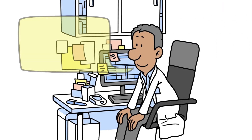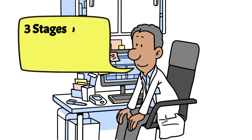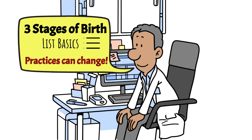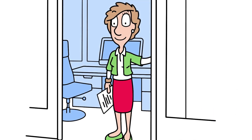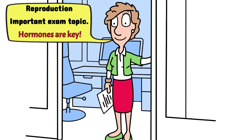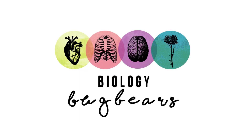For your exam, the most important thing you need to know is that there are three stages of birth and you must be able to list the basic details for each — bullet points only. Remember that science advances and these advances will influence practices, such as delaying clamping and cutting the umbilical cord. Human reproduction is a very important long topic that appears nearly every year on the exam, so it's worth revising. Break it down into sections, keep it simple, and remember that hormones are really important in this chapter and could be tied in with the endocrine system. Always use your textbook and do past papers. Good luck.